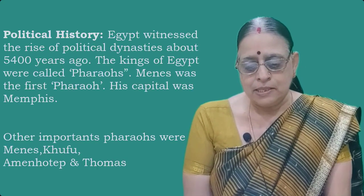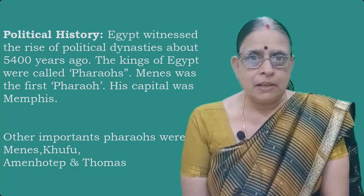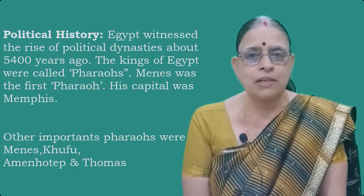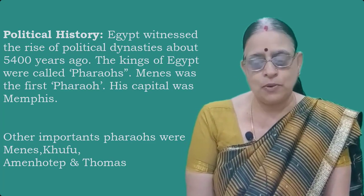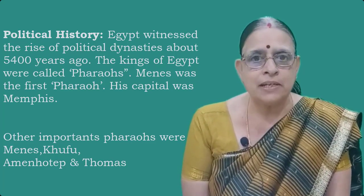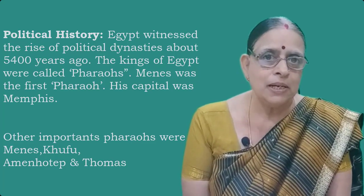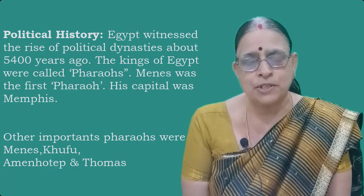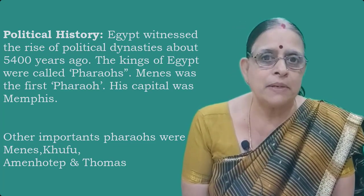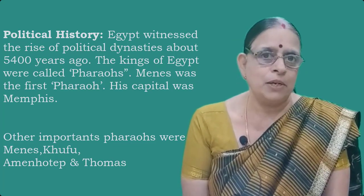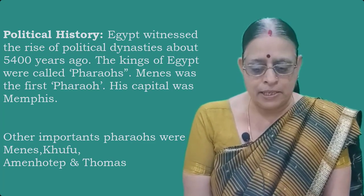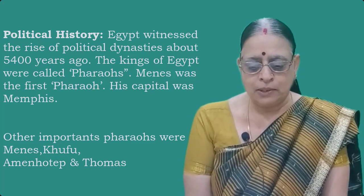Now let us learn about the political history of the Egyptian civilization. The rise of political dynasties dates back to 5400 years ago. Political dynasties means kingdoms — small kingdoms are called as dynasties. Kings of Egypt were called as pharaohs. Minas was the first pharaoh or the first king of Egypt, and Memphis was the capital — it was an important political center of the Egyptian civilization. Other important pharaohs were Khufu, Amenhotep, Thutmose, etc.